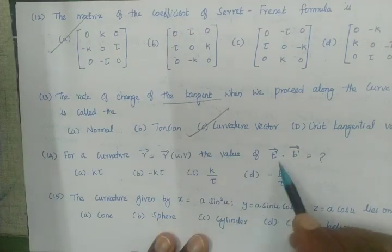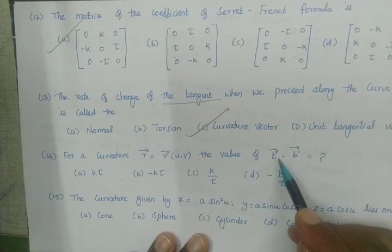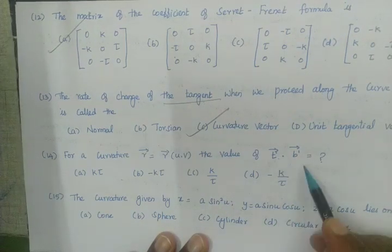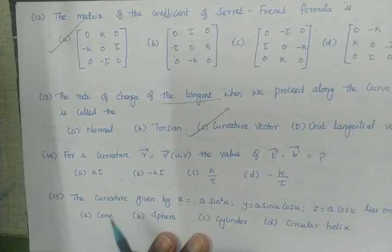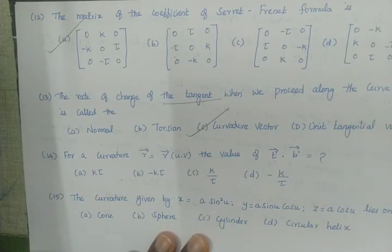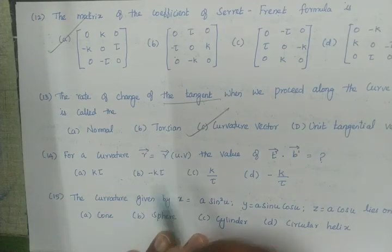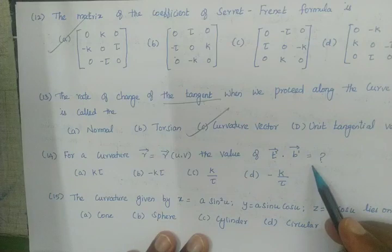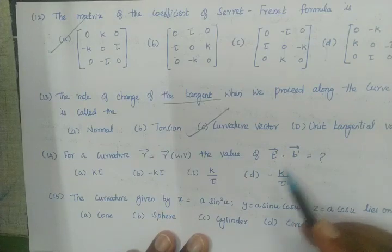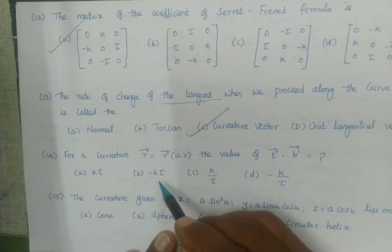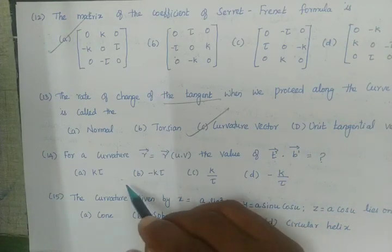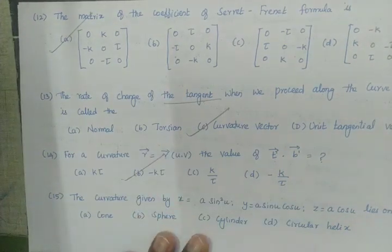The value of T dash vector and B dash vector for a curve of curvature R is minus K times τ.